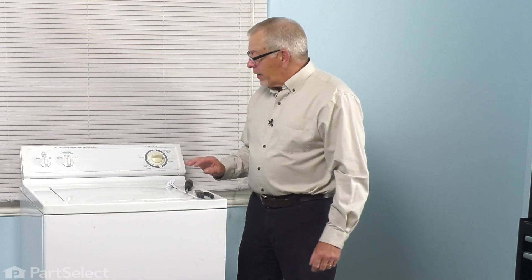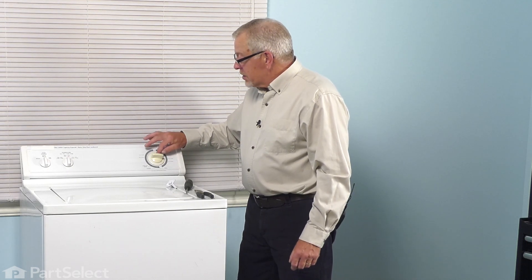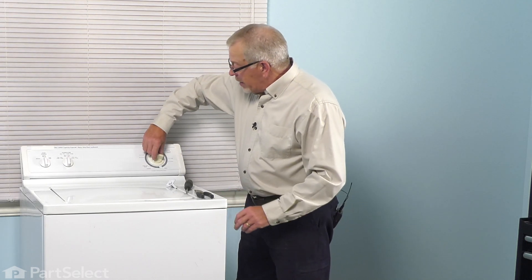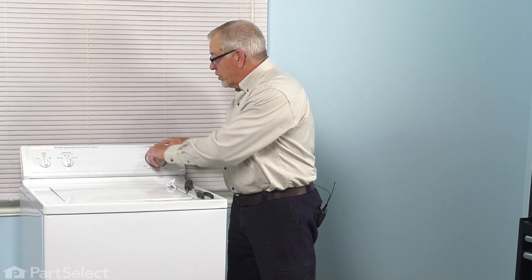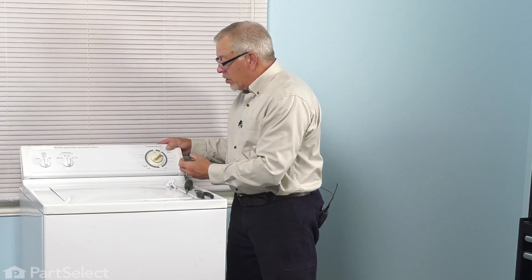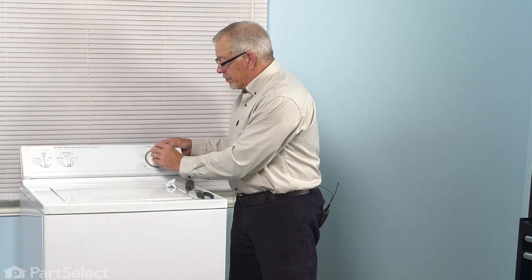To do this repair, if the existing knob on your washer is still in place, you'll need to rotate the dial to one of the off positions because you will be pulling out on that knob and we don't want the washer to inadvertently start.